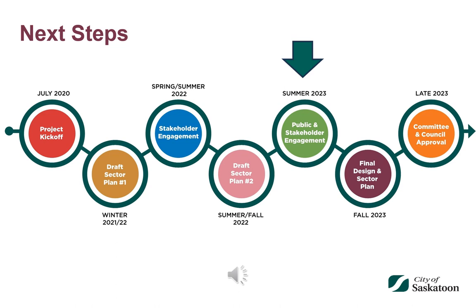The sector plan amendment is currently in the public and stakeholder engagement phase. Following this, all feedback will be reviewed and changes to the sector plan document will be considered. In late summer, the final text, figures, and overall design of the sector plan will be completed. Then, in late 2023, the sector plan will go to city committees and council for final approval.